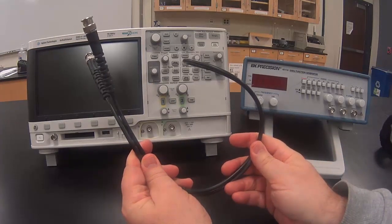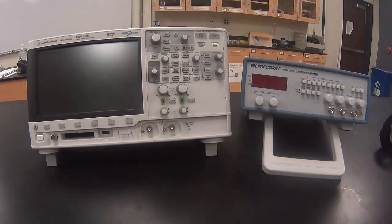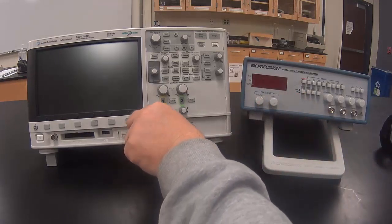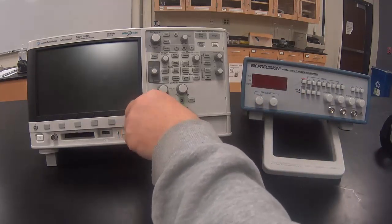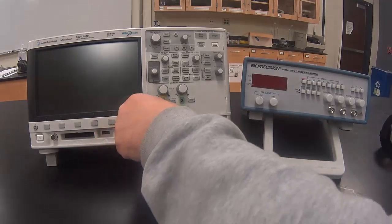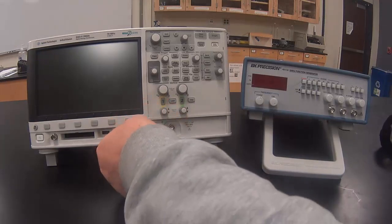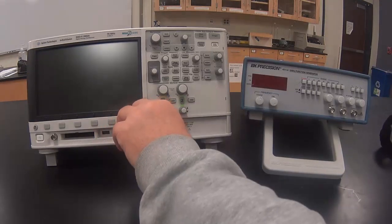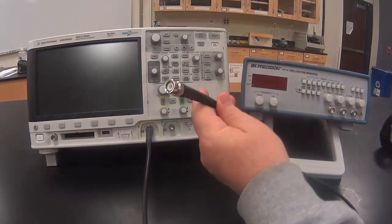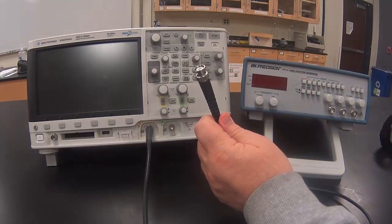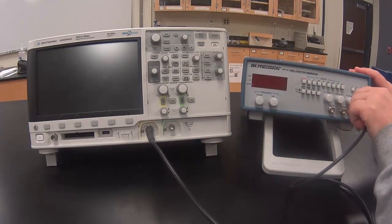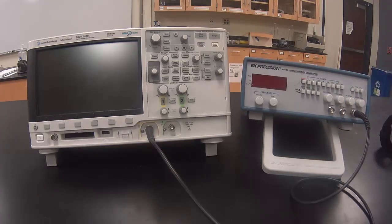We will be using a BNC cable, also known as a coaxial cable. Connect one end of the cable to channel 1 or channel A or X. Be sure to push in and give it a turn so it clicks into place. If it's not clicked into place well, you may get a bad signal. The other end, put it onto the output of the function generator.